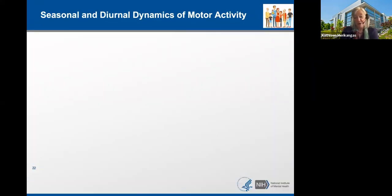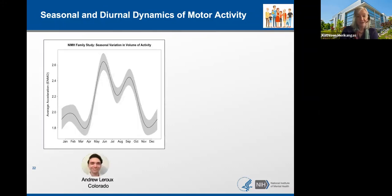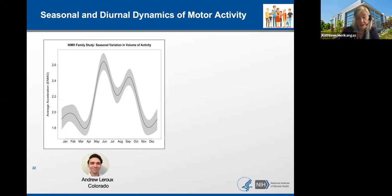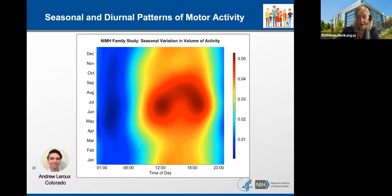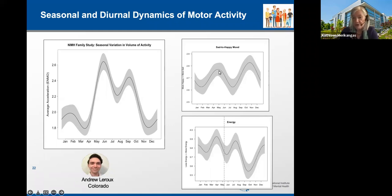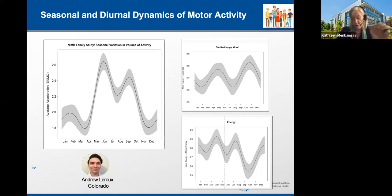We also see tremendous seasonal variation in motor activity. My colleague Andrew Leroux from Colorado characterized seasonal variation in actigraphy-derived motor activity, showing huge fluctuations across months of the year. Using EMA, we also see corresponding seasonal fluctuations in analog ratings of mood and energy in non-clinical samples as well as in people with mood disorders. Understanding the determinants of this seasonal variation and how it interrelates with other systems is one of the important questions driving our work.